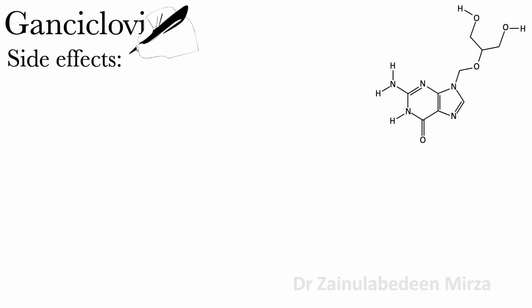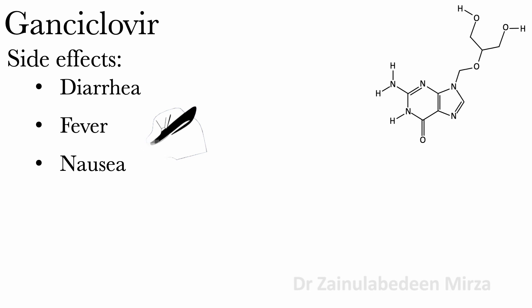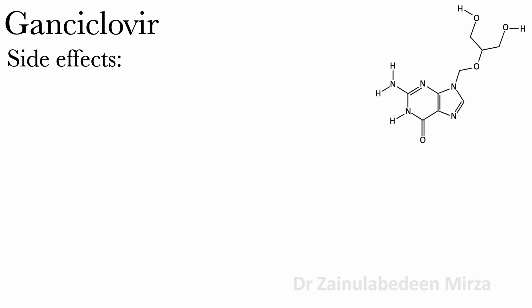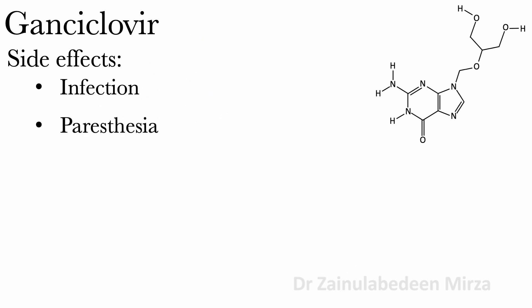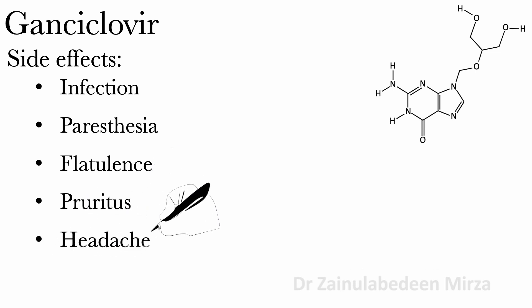Side effects of GAN Cyclophere are diarrhea, fever, nausea, abdominal pain, vomiting, dysphoriasis, infections, prosthesia, glatelunus, proritis, headache, dyspepsia.